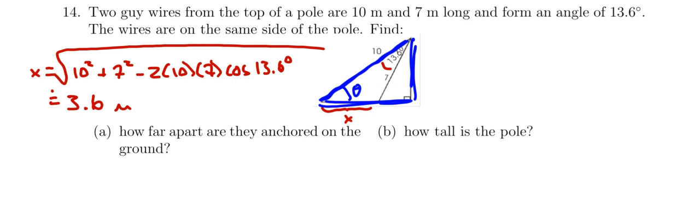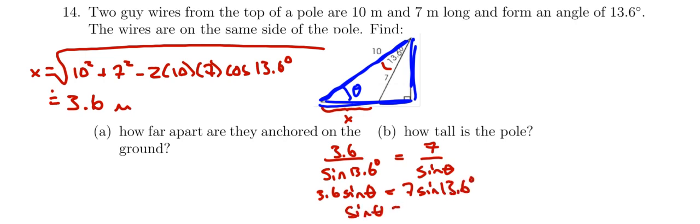And I'm going to use the sine law to figure out what that angle is, because now I know that 3.6, which is side x, over the sine of 13.6 should equal 7 over the sine of that angle theta. Now, when I do this, I'm going to cross multiply, so 3.6 sine of theta will equal 7 times the sine of 13.6. So the sine of theta is going to equal 7 sine of 13.6 degrees over 3.6.